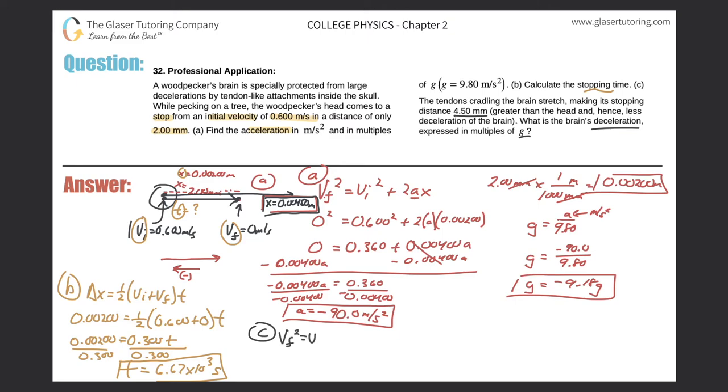So the final velocity squared is equal to the initial velocity squared plus two multiplied by the acceleration multiplied by the displacement. So the final velocity is still zero because the head is still coming to a stop. The initial velocity is still the same, 0.600 squared plus then two multiplied by the acceleration, which is what we're trying to find. And now the displacement is the value that changes. So this is 0.00450.